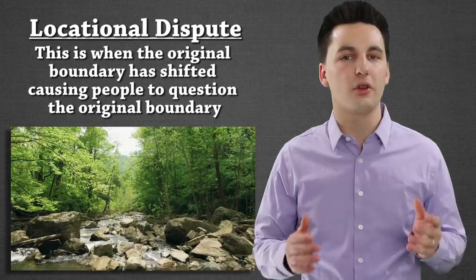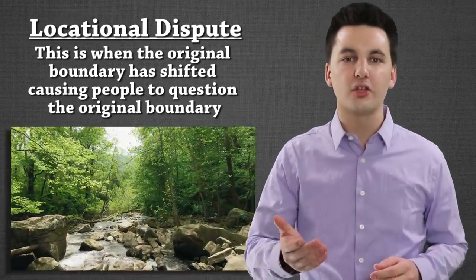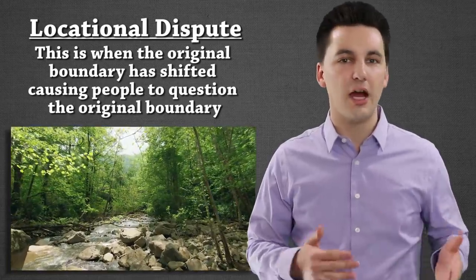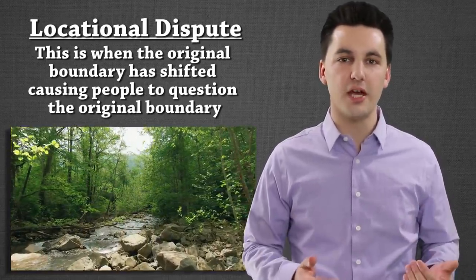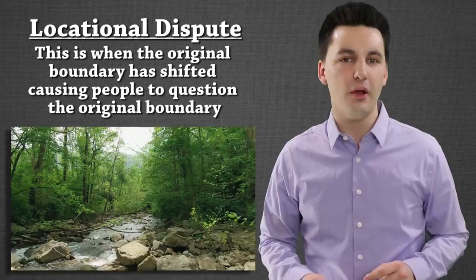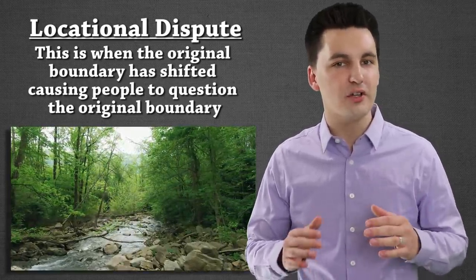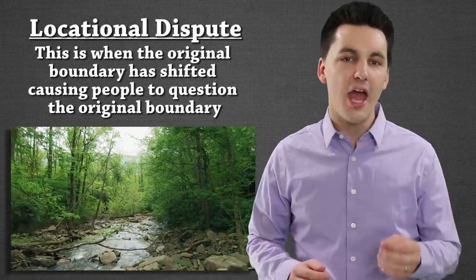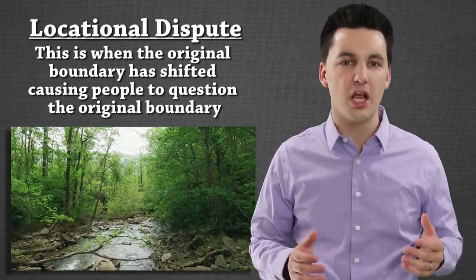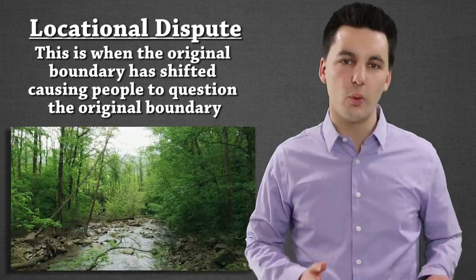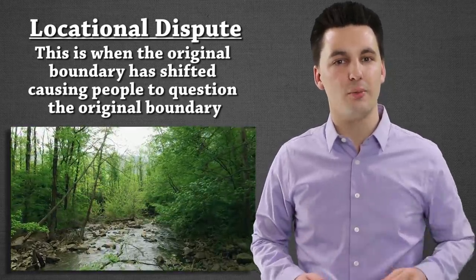Disputes can also happen because of the changing geography of a region. These are known as locational boundary disputes. For example, some places in Mississippi have actually found themselves in Louisiana due to how the Mississippi River has shifted over time. The original boundary definition isn't being contested — what's changed is the geography itself, making this a locational boundary dispute.